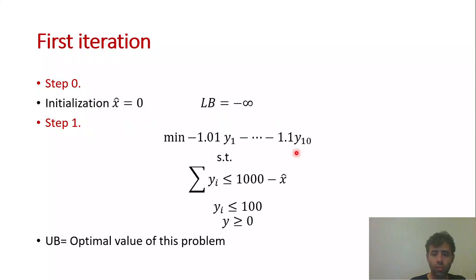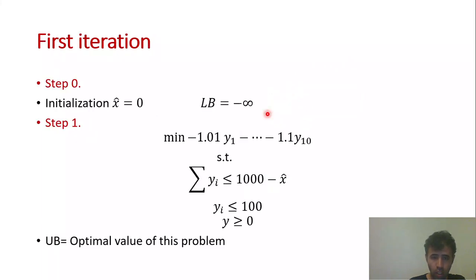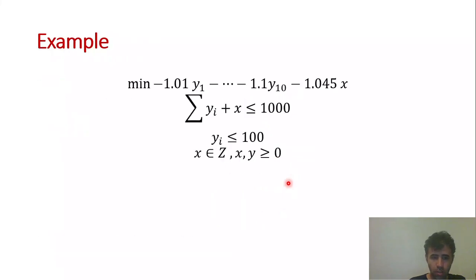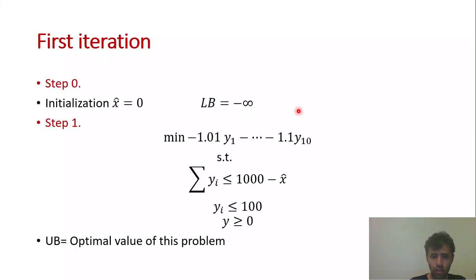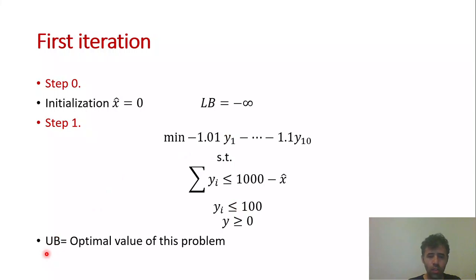In step one, we form the sub problem. To form the objective function, we drop the x part. For the constraint, we take the x part to the right-hand side and initialize it by zero. The remaining constraints are left unchanged since they don't have variable x. By solving this problem, we update the upper bound, and also find lambda, the solution of the dual problem.